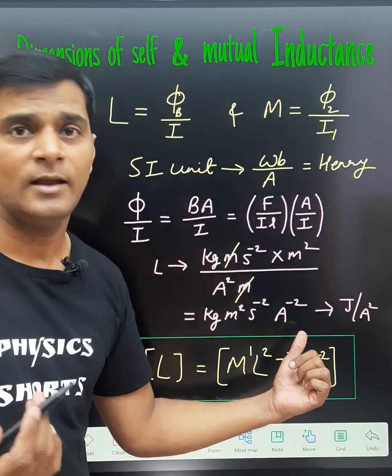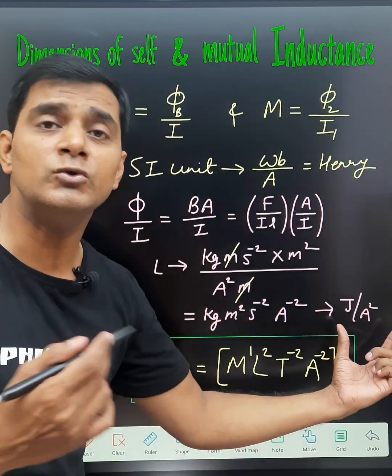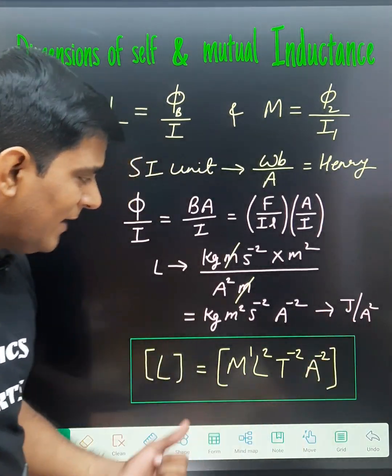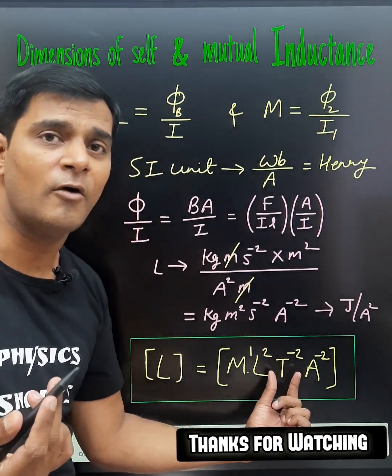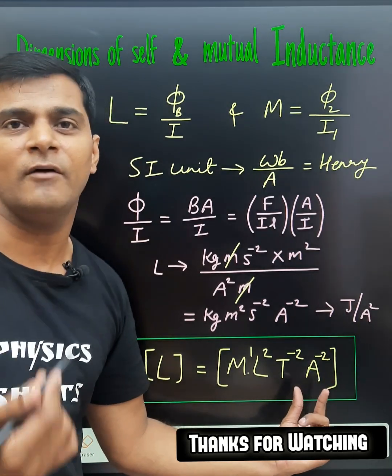We can also write this as Joule/A². If we write the dimension: kilogram means M¹, meter square is L², second⁻² is T⁻², and ampere⁻² is A⁻².